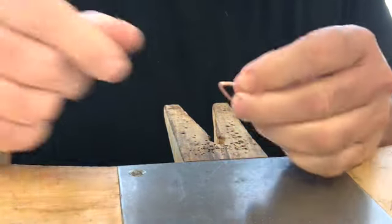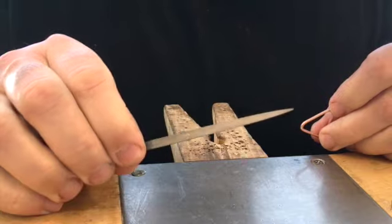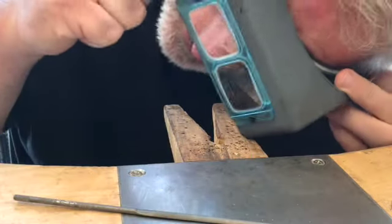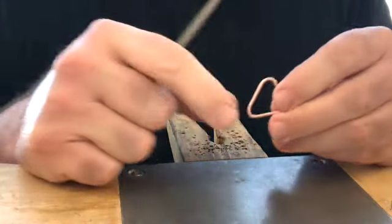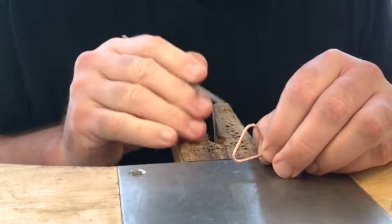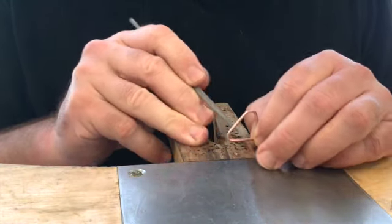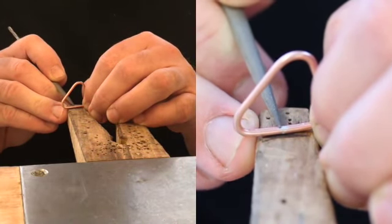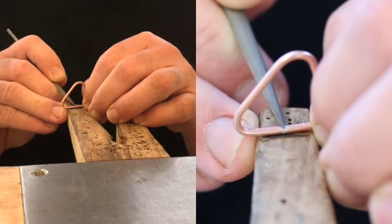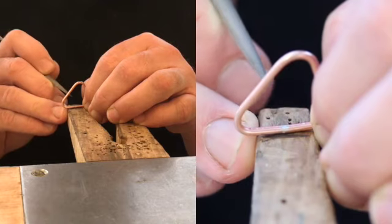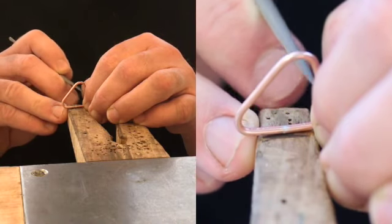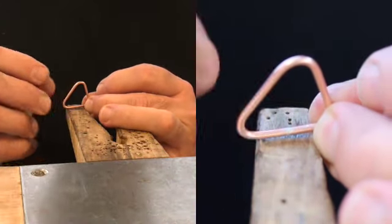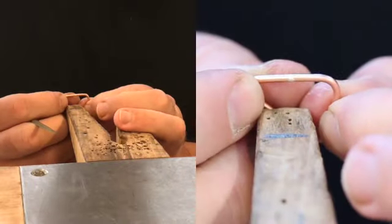For the next part of this exercise you're going to need a half round needle file, your bench pin, and your visor so you can see what you're doing. The next step is for us to remove some of the excess solder from the inside of the ring from the side that's going to be toward the inside of the ring. We don't want to have a lump of excess solder on the inside of the band when we go to shape it.